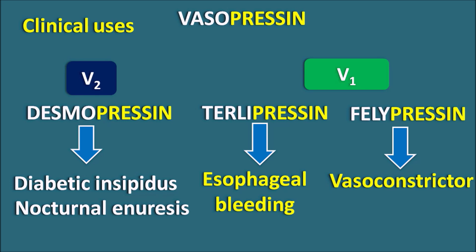In summary, for anti-diuretic activity, desmopressin is more preferred, and for vasoconstrictor activities, terlipressin and felipressin are more preferred. Vasopressin is the natural anti-diuretic hormone which is not suitable by oral route and is short-acting. Desmopressin is a long-acting anti-diuretic hormone used for diabetes insipidus and nocturnal enuresis, and it is an argipressin. Terlipressin and felipressin are lypressins mainly used as vasoconstrictors — terlipressin is long-acting and felipressin is short-acting.